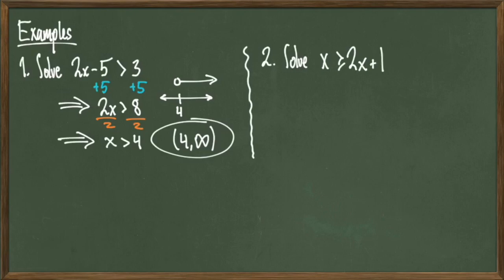For our next example, solve x is greater than or equal to 2x plus 1. First thing I'll do is subtract 2x from both sides to give me negative x is greater than or equal to 1. If this were a linear equation, I would multiply both sides by negative 1, which I can still do. But when I do that, remember that I have to flip my inequality. Once I flip it, I get a solution set of x is less than or equal to negative 1.